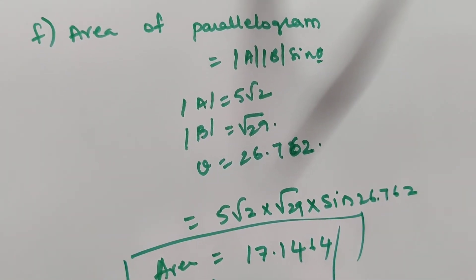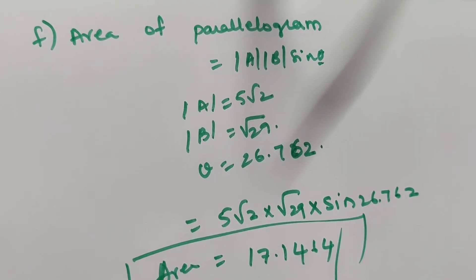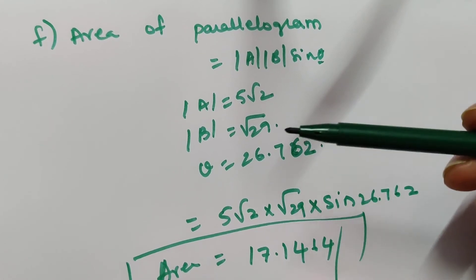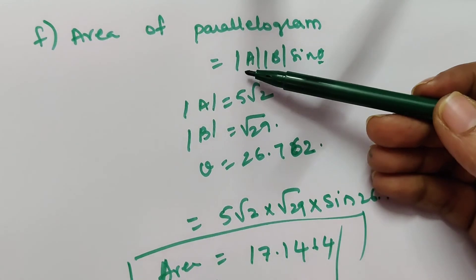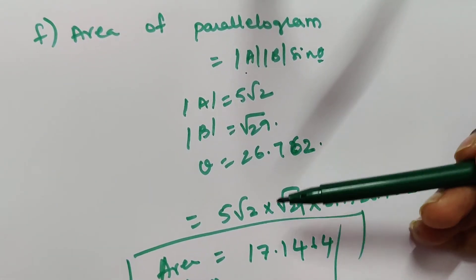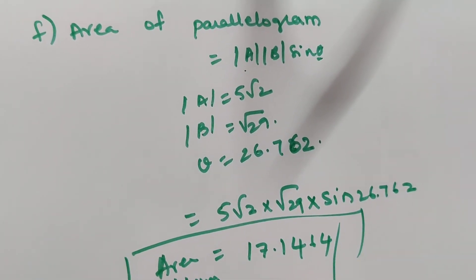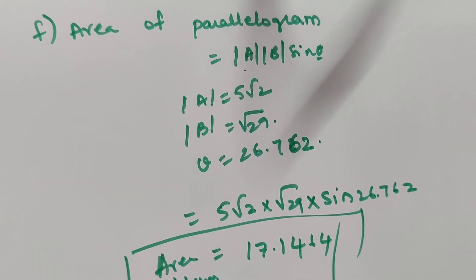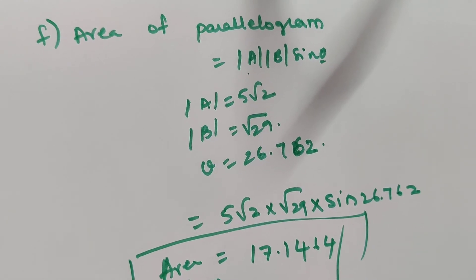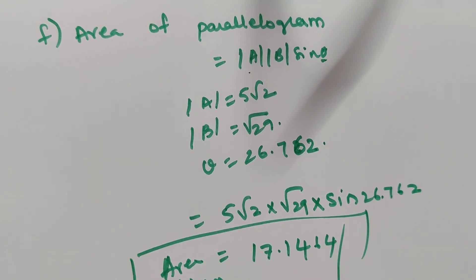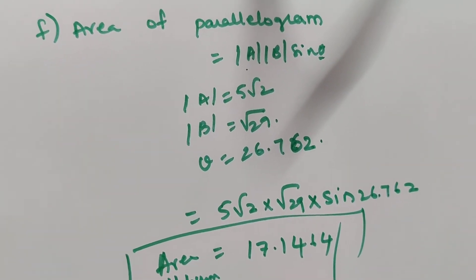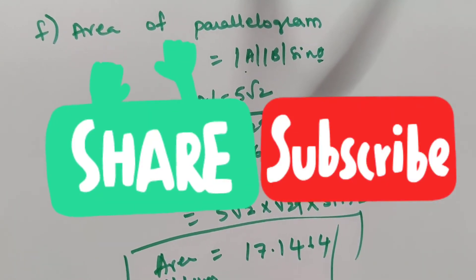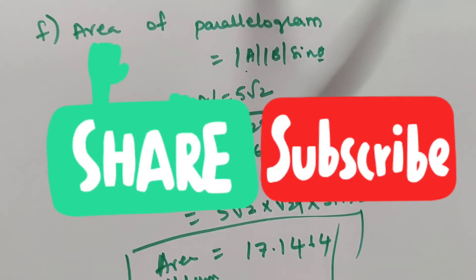This is how you solve this type of problem — an important problem from chapter 1 of vector analysis. Each step builds on the previous: |A|, |B|, and θ are reused across parts. Tomorrow we start chapter 2 on Coulomb's law and field intensity. This is a frequently asked question in B.Tech engineering, especially in JNTU. If you have any doubts, please write in the comment section.